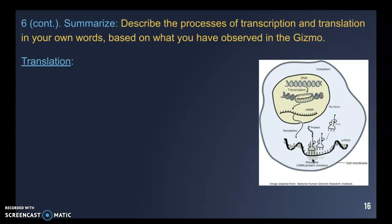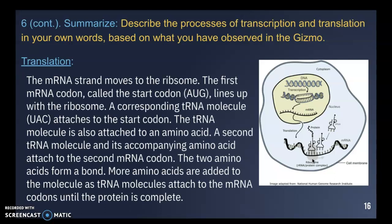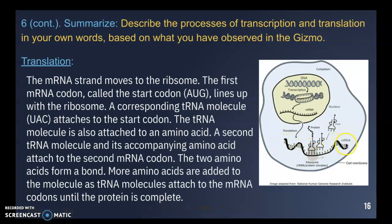Once the mRNA strand leaves the nucleus, translation can occur. The mRNA strand moves to the ribosome, and the first codon — the start codon — lines up with the ribosome. A corresponding tRNA molecule attaches to the start codon carrying its amino acid. A second tRNA comes in with its amino acid, and the process continues, building the chain one amino acid at a time until the entire protein is completely built and the cell can use it.